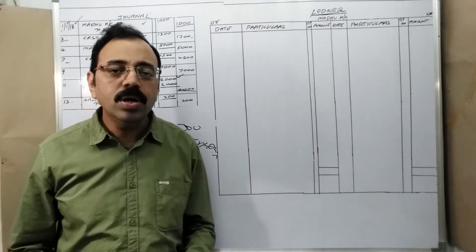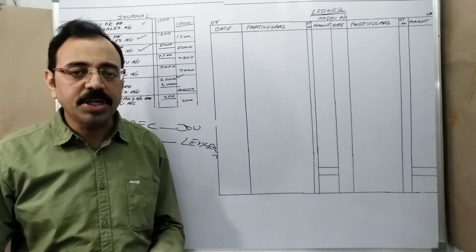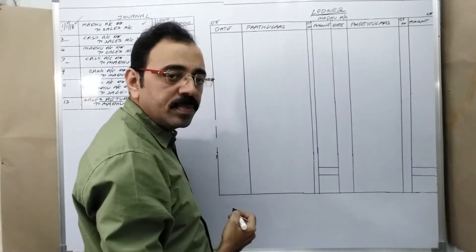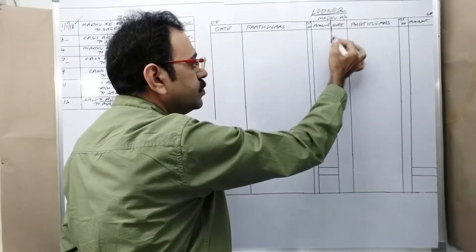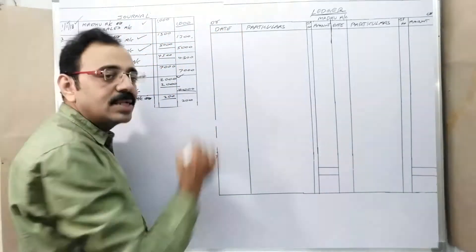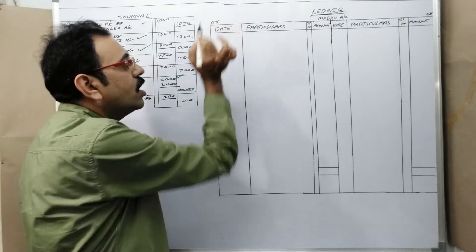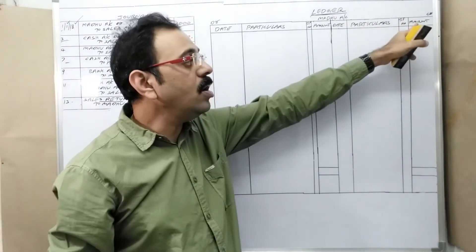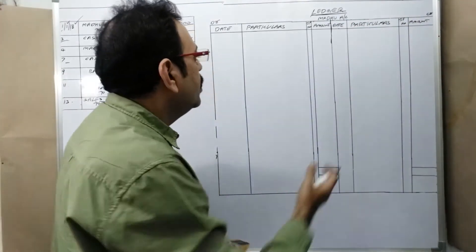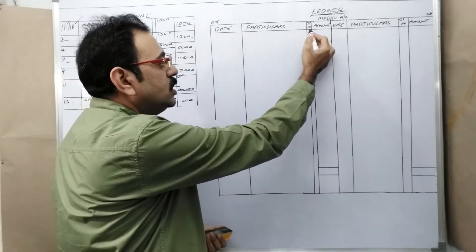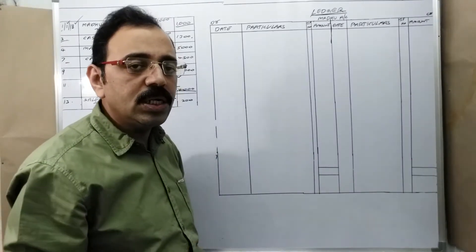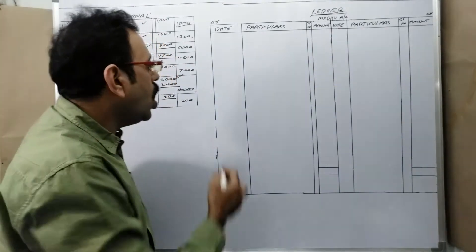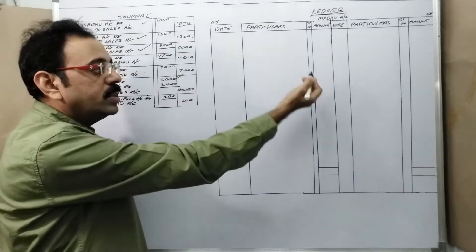In the journal book we record transactions. After recording, the next step is classification of those transactions, which we do in the ledger. So remember, ledger is a book used to classify the recorded information. An account looks like this - it is divided into two parts by a center line. The left part is known as the debit side, denoted by DR. The right part denotes credit, written as CR. The debit side has date column, particulars column, JF number (journal folio number), and amount. The right side has the same columns.